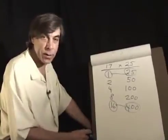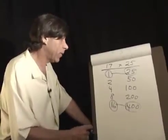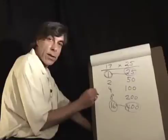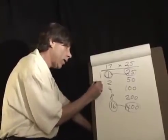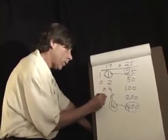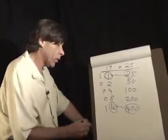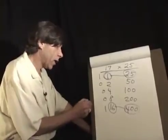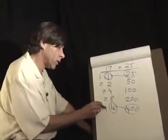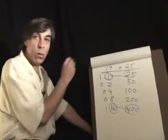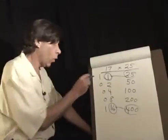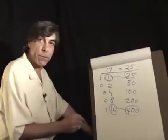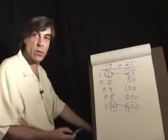And this is how computers do it as well, except instead of circling or not circling a number, they would have a one or a zero. So the number seventeen in binary arithmetic is one, zero, zero, zero, one — or electricity, no, no, no, and electricity. And that will give us the sum. That's how this works.